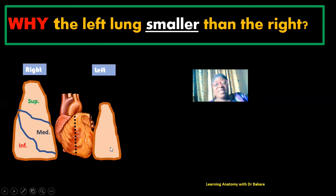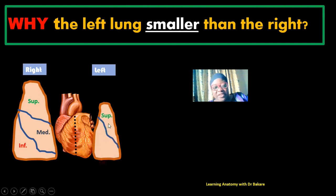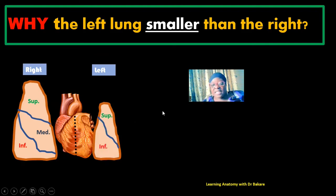What we have on the left side is different from the right. On the left side, we have just one fissure — the oblique fissure. This fissure divides the left lung into the superior lobe and the inferior lobe. So on the right lung we have three lobes, while on the left lung we have two lobes.